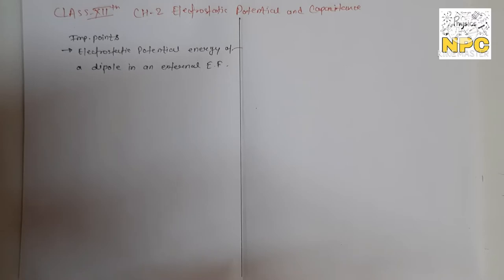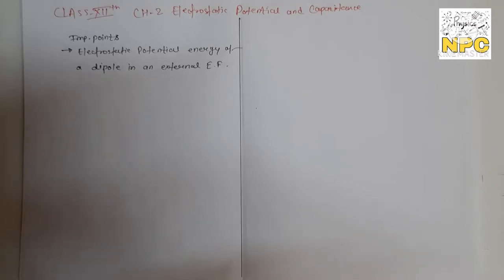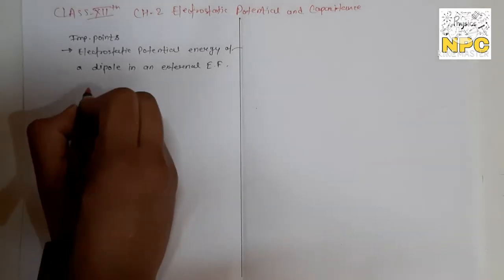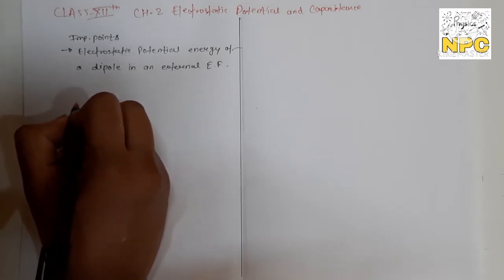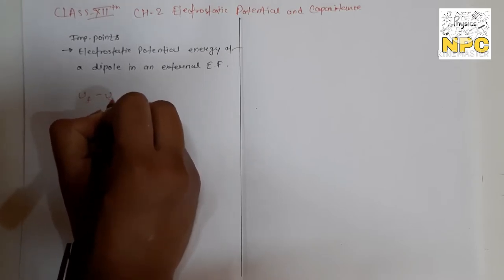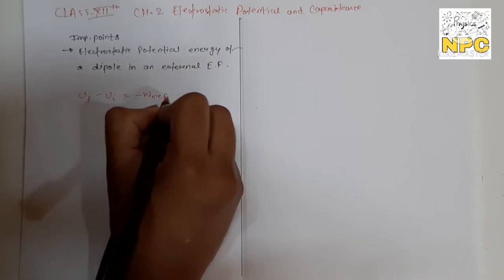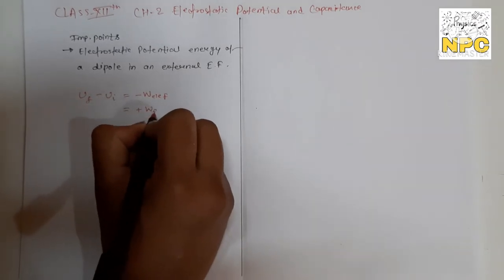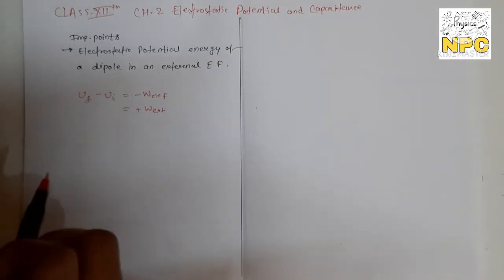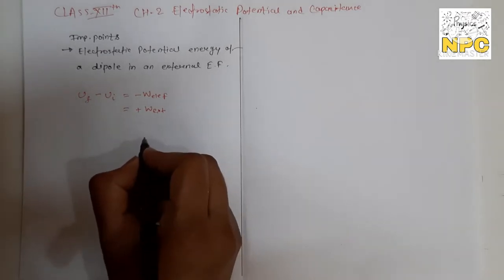Let's get started, but before I start this concept, let's recall the previous one. Electrostatic potential energy — जब तक अगर आपको नहीं पता है तब तक आप इस concept को clear नहीं कर पाएंगे। The electrostatic potential energy is defined as change in potential energy. Change in electrostatic potential energy is equal to the negative work done by the electric (electrostatic) force, and positive work done by the external force.